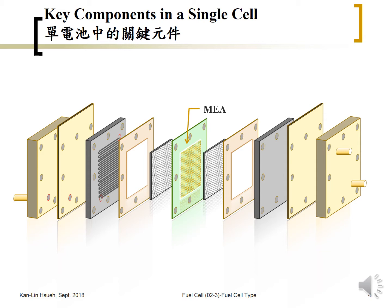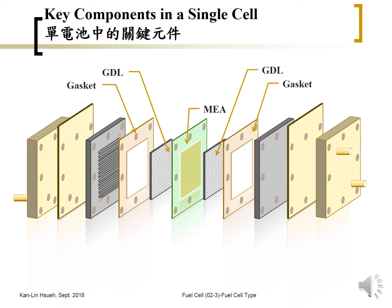Next to the MEA is the GDL — gas diffusion layer. Since it has to transport the gas in and out, it's a porous medium. And since the outskirt is also porous, the gas will leak out from the outside. So we need a gasket to prevent possible leakage. The gasket is made of flexible Teflon, so it's chemically inert but also seals the gas so it will not leak out from the outside, and also acts as an insulator to prevent the anode and cathode from getting in contact.